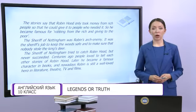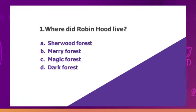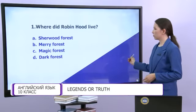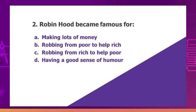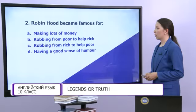Now I would like you to answer the following questions about the text. Question one: Where did Robin Hood live? Sherwood Forest, Merry Forest, Magic Forest, or Dark Forest? The right answer is A — Sherwood Forest. Next: Robin Hood became famous for making lots of money, robbing from poor to help rich, robbing from rich to help poor, or having a good sense of humor? The right answer is C — robbing from the rich to help the poor.